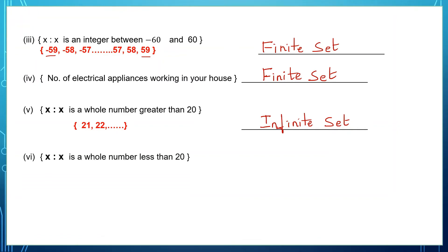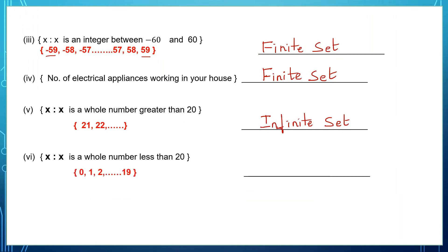Next one: x is such that x is a whole number less than 20. These are all whole numbers less than 20 — 0, 1, 2 up to 19. The dots indicate numbers in between, but we can count them. So this is a finite set.